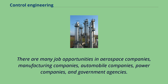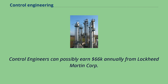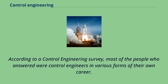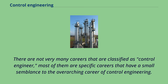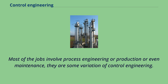There are many job opportunities in aerospace companies, manufacturing companies, power companies, and government agencies. Some places that hire control engineers include companies such as Rockwell Automation, NASA, Ford, and Goodrich. Control engineers can possibly earn $66,000 annually from Lockheed Martin Corporation and up to $96,000 annually from General Motors Corporation. According to a control engineering survey, most respondents were control engineers in various forms of their career. There are not very many careers classified strictly as control engineer — most are specific careers with a small semblance to the overarching field. A majority of control engineers surveyed in 2019 are system or product designers, or control or instrument engineers, with most jobs involving process engineering, production, or maintenance.